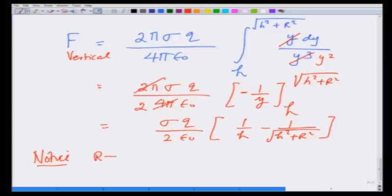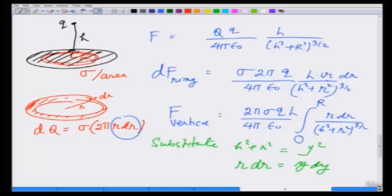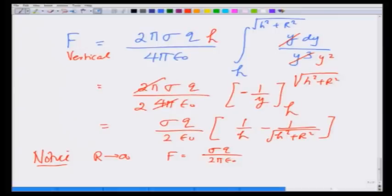The answer comes out to be 2 sigma q over 2 epsilon_0 times (1/h − 1/√(h² + R²)) in the vertical direction. Notice that if R tends to infinity, this force goes to sigma q over 2 epsilon_0 times (1/h) — I correct the missing h factor — giving the force as sigma q over 2 pi epsilon_0, which is the well-known result for an infinite plane.